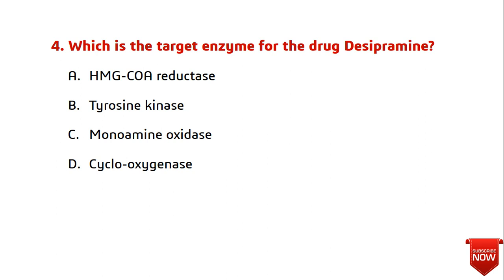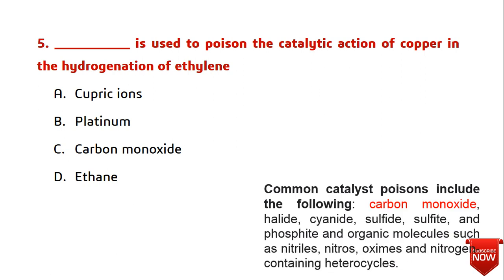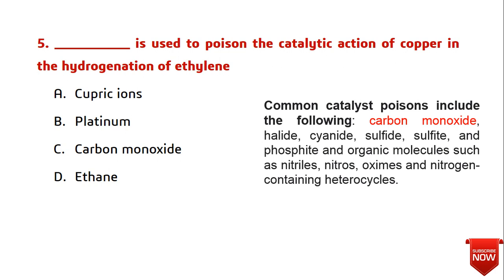Prostaglandins play a key role in the inflammatory response. The target enzyme of desipramine is monoamine oxidase. Question five: which is used to poison the catalytic action of copper in the hydrogenation of ethylene? Commonly known catalytic poisons include carbon monoxide, halides, cyanides, sulfides, phosphides, and organic molecules such as nitriles, nitros, oximes, and nitrogen-containing heterocyclics. Among the given options — cupric ions, platinum, carbon monoxide, and ethane — the answer is carbon monoxide.